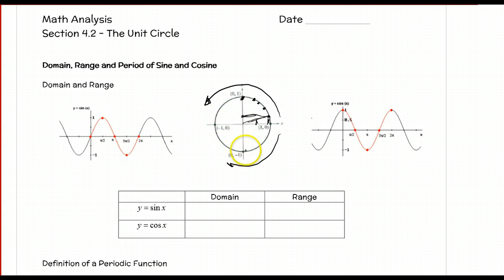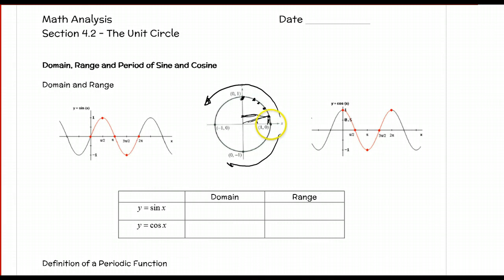Then at 3 pi over 2, the y-coordinate is negative 1, so at 3 pi over 2 we have negative 1. This red portion of the graph represents one full revolution around our circle, which gives us one period of the graph. The sine and cosine graphs are repeating functions, and the part that repeats we call the period. The period goes from 0 to 2 pi, and the next period looks exactly the same.